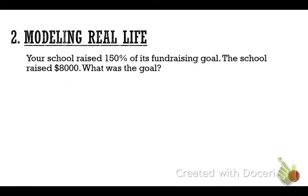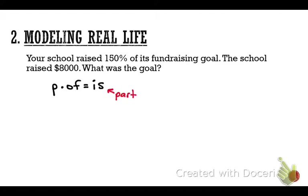Modeling Real Life: your school raised 150% of its fundraising goal, and the school raised a total of $8,000. We want to figure out what their goal was. Start with the same formula: p times of equals is. The is is the part; the of is the whole or total.